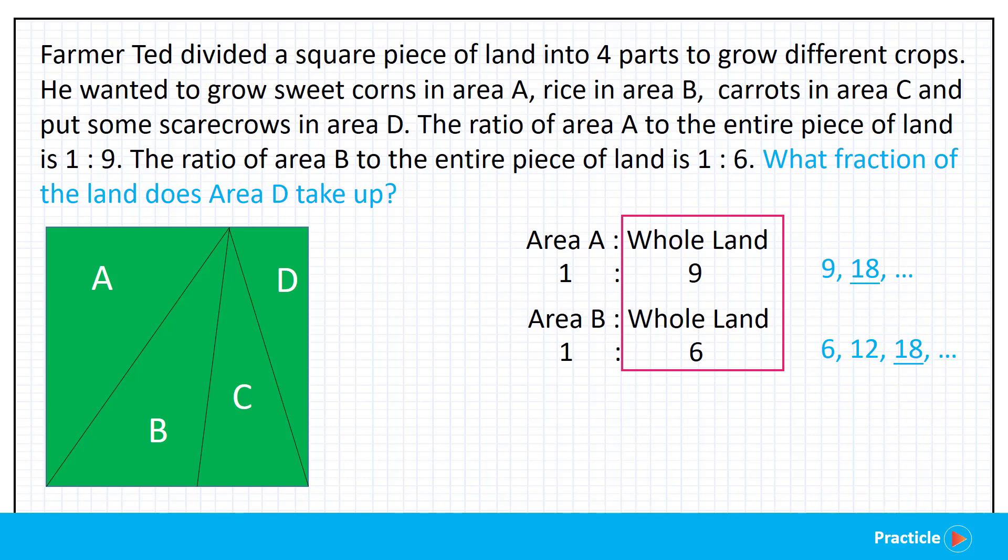Now, the next thing that we need to do is to turn this 9 that you see here into 18, and this 6 that you see here into 18 as well. So let's start with the ratio 1 is to 9. How do we transform 9 to 18? Well, we can multiply this by 2. And don't forget that because we are dealing with ratios, when we change the ratio of one side of the ratio, we need to change the value on the other side of the ratio too. So 9 times 2 equals 18 and 1 times 2 gives us 2. Great job everyone! And now we know that 1 is to 9 is the same as 2 is to 18.